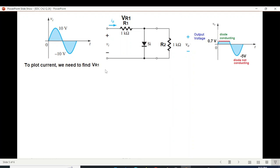To plot current, we need to find VR1. So because the current is through this resistance only. This will actually divide here, but we know for sure that the current through VR1 is IR. So we will try to find VR1. And if you see from here, VR1 is V input minus V output.